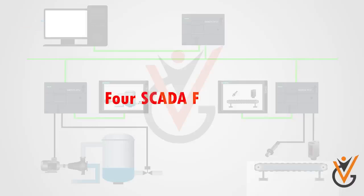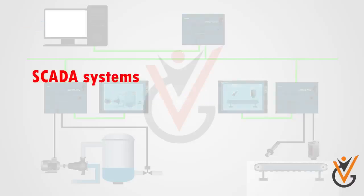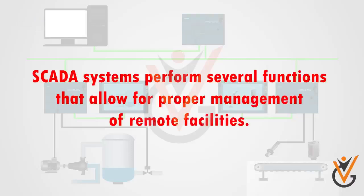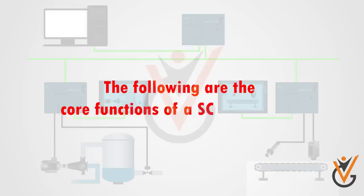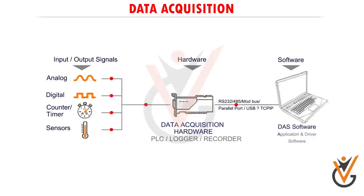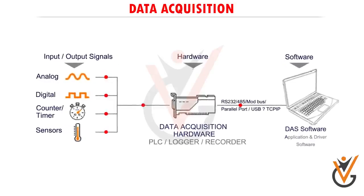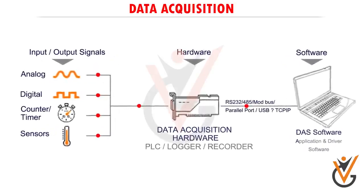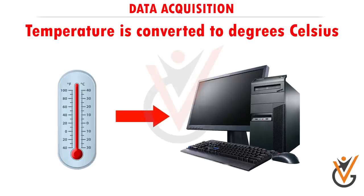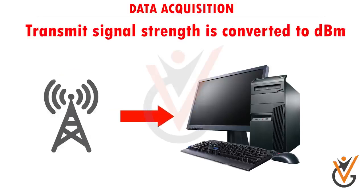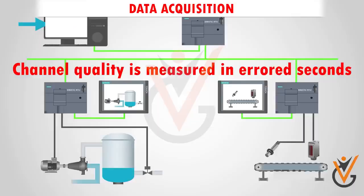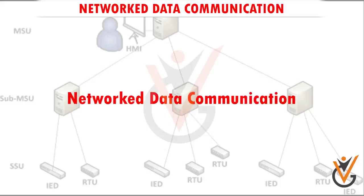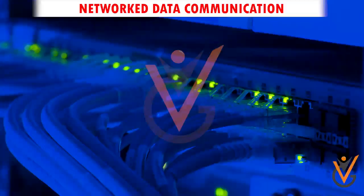SCADA systems perform several functions that allow for proper management of remote facilities. The core functions include: data acquisition — the collection of SCADA data frequently involves analog to digital conversion, where temperature is converted to degrees Celsius, transmit signal strength is converted to dBm, and channel quality is measured in error seconds.